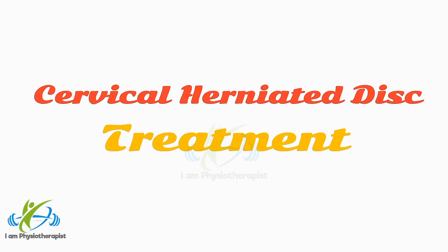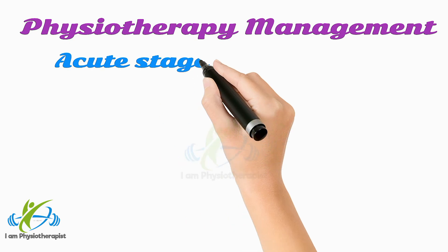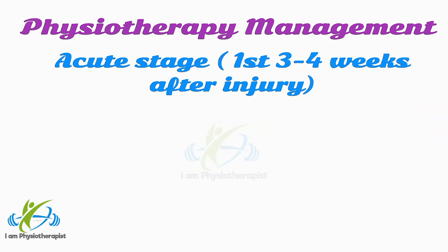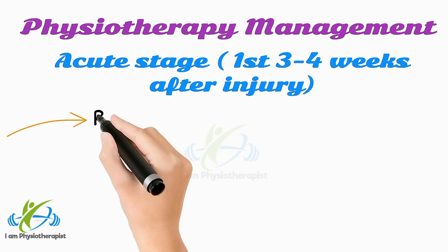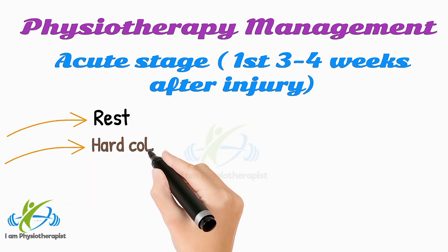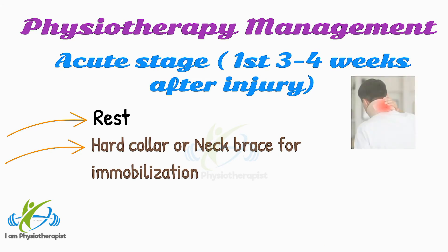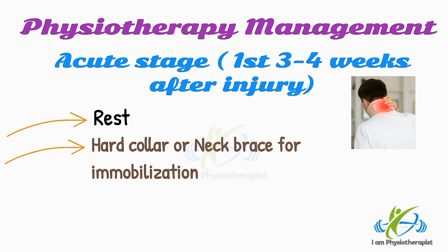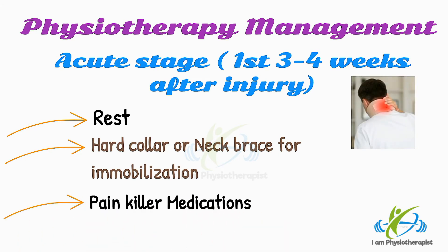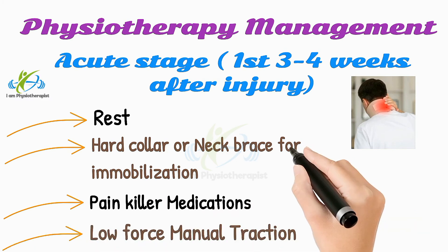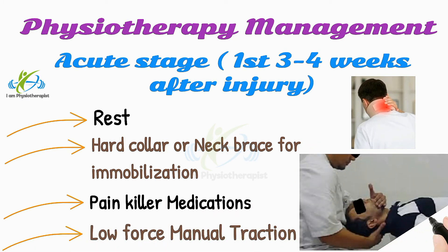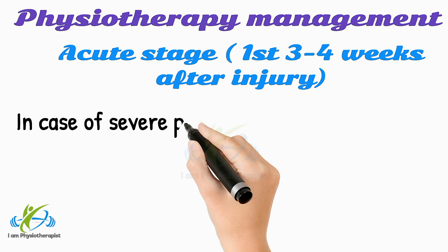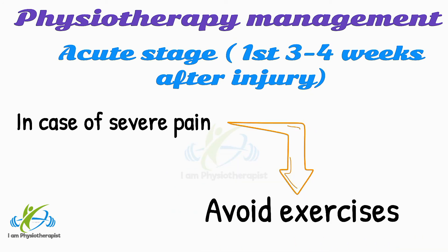Treatment of Cervical Herniated Disc — Conservative Treatment. In the acute stage, from the first 3 to 4 weeks after injury: rest, hard collar or neck brace is preferable for immobilization of the neck, medications to relieve pain, and low force manual traction to relieve pain. In case of severe pain, all exercises can be postponed until improvement of pain.